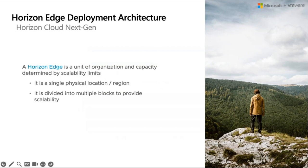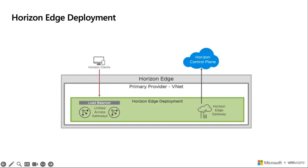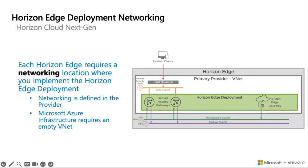The biggest change in Horizon Next Gen is the Horizon edge concept. Horizon edge is a unit of organization and capacity determined by scalability limits. It is a single physical location or region, and it's divided into multiple blocks to provide scalability. In our Horizon edge deployment, we can streamline monitoring and management of Horizon clients and the user environment from one control plane. Each Horizon edge requires a networking location where you implement the Horizon edge deployment, and Microsoft Azure infrastructure requires an empty VNet.